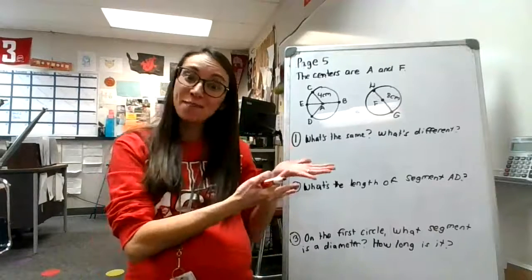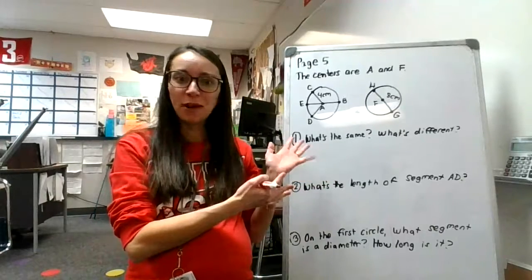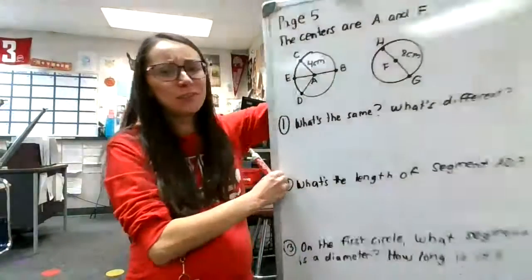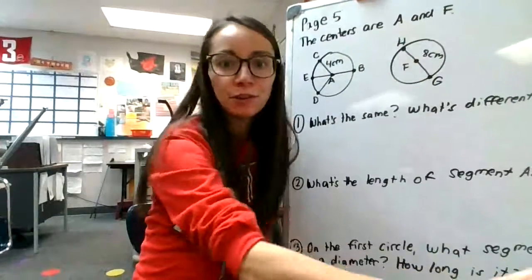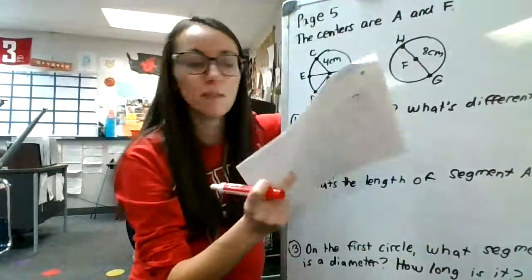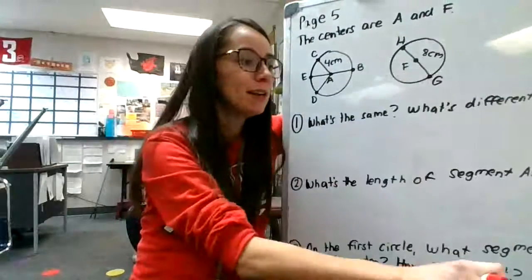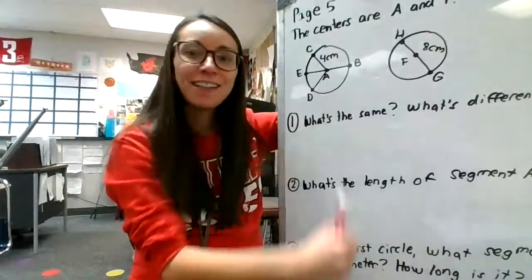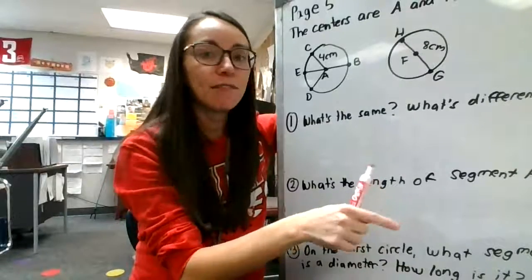All right, so here we have page five, which mine's on the whiteboard. And the gist of what's written on your paper, I didn't write every little thing down because I'm writing on a whiteboard. I don't want to write it all down. It says, here are two circles. Their centers are A and F.